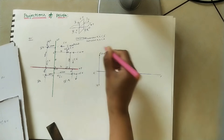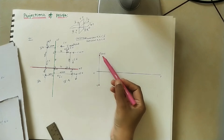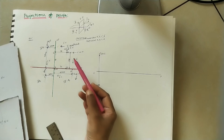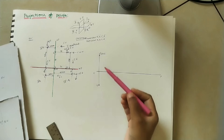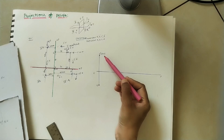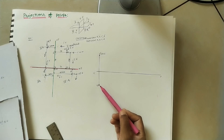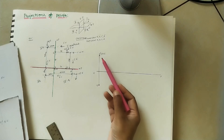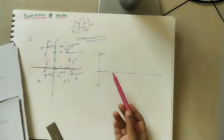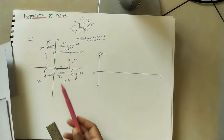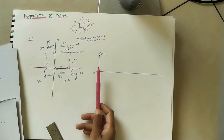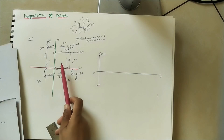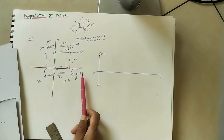Draw the XY line of any length. Mark A' at 38 mm above the XY line. Then mark a at 31 mm below the XY line on the same projector line. Remember A' and a must come on the same line — this line is called the projector. This is the 2D diagram of projections of point A.